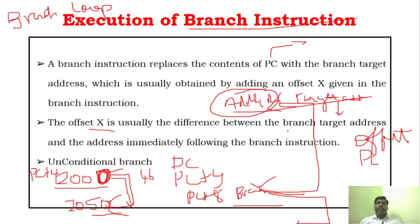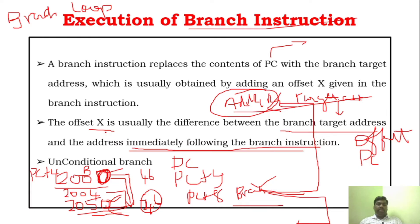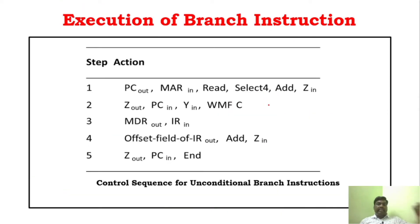The offset value is the difference between the target address and the address immediately following the branch instruction. The target address is 2050, and the address immediately following the branch instruction is 2004. So the difference between these two is 46 — that is how you determine the offset value. While executing the branch instruction, the PC has to add this offset value to find out the target address.